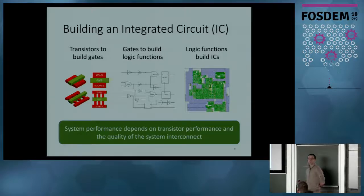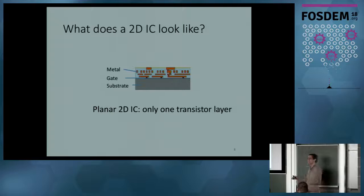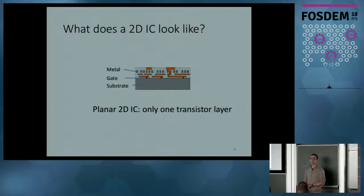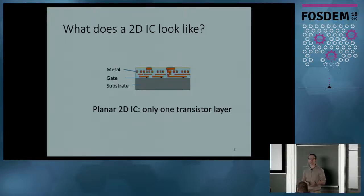What does an IC look like when everything is done? There are three essential parts: on the bottom, the substrate in grey, on which all your gates and transistors are printed, and then a few metal layers to interconnect them all together. What is important to understand here is that a regular 2D IC only has one layer of transistors, and that is one of its limitations.